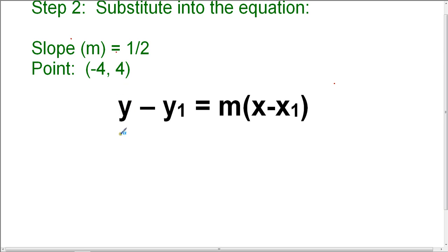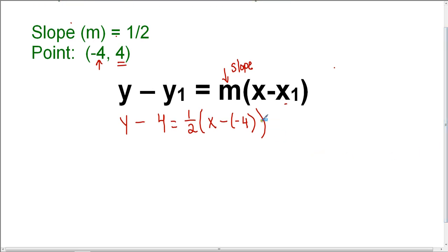Remember this y remains y, minus our point, the y coordinate is 4, equals the slope, which is m in the equation, is 1 half, times the quantity. Remember this x remains x, and x sub 1 is the x coordinate of the point, which is negative 4. So I've substituted for the x and y coordinate of the point, and the slope.